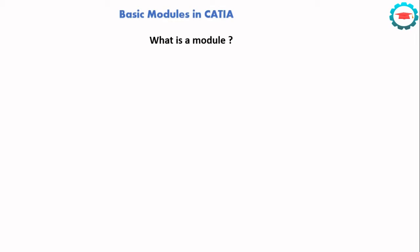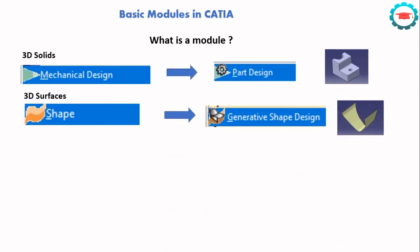So if you want to do solid modeling, there's a separate workspace or module. If you want to do surface modeling, there's a separate workspace or module. In CATIA, the basic workspaces or modules are the Part Design module and the Generative Shape Design module. These are the most basic modules for doing CAD design in CATIA.